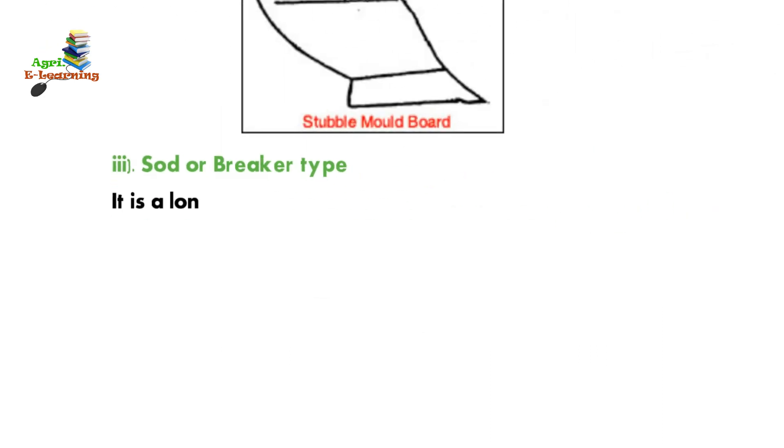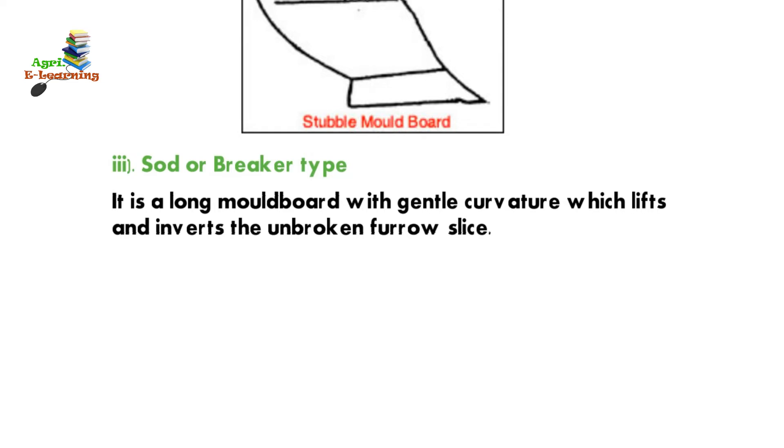Sod or breaker type: it is a long moldboard with gentle curvature which lifts and inverts the unbroken furrow slice.